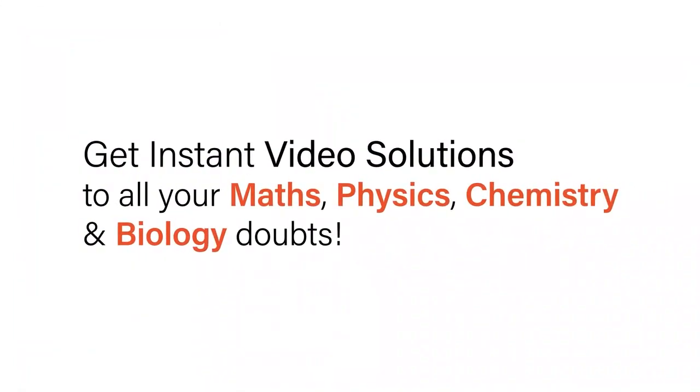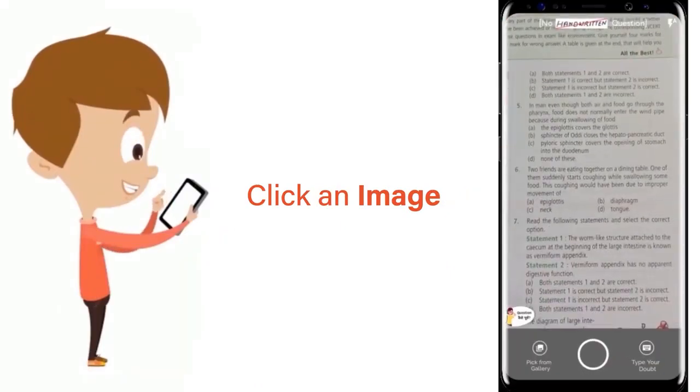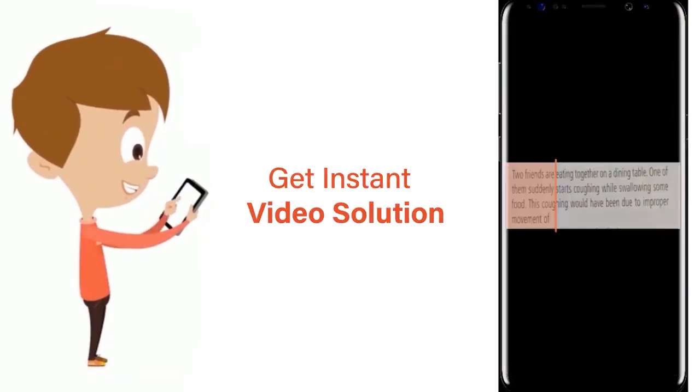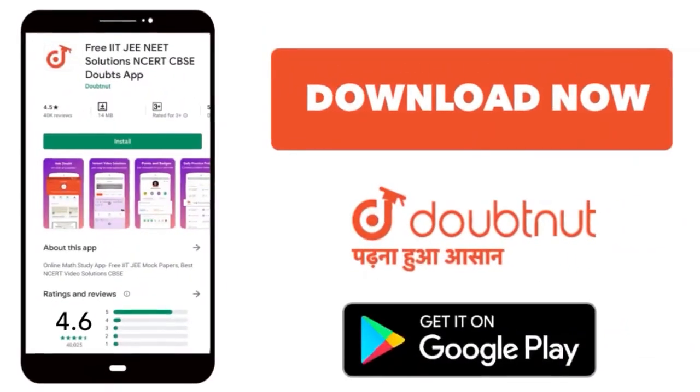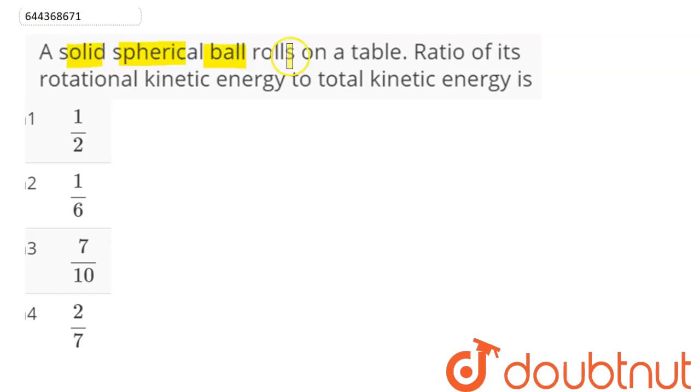With Doubtnet, get instant video solutions to all your maths, physics, chemistry, and biology doubts. Just click the image of the question, crop the question, and get instant video solution. Download Doubtnet app today. Question is: a solid spherical ball rolls on a table. Ratio of its rotational kinetic energy to total kinetic energy is...